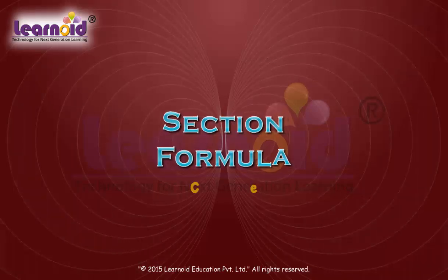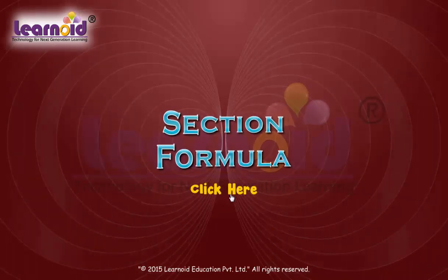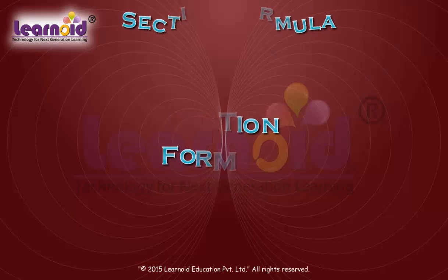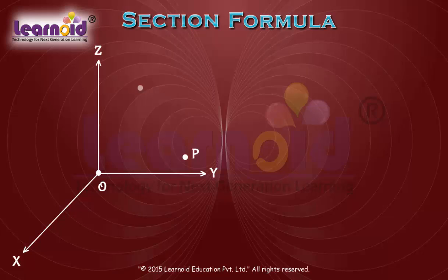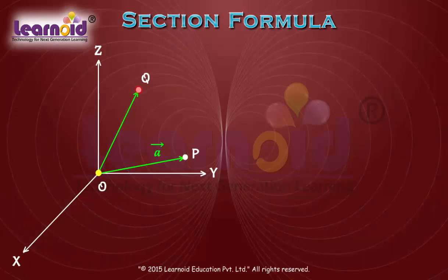Section Formula. Let P and Q be any two given points whose position vectors are OP and OQ denoted by vector a and vector b.